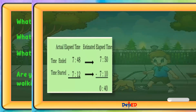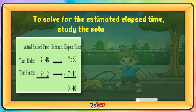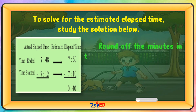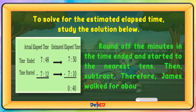To solve for the estimated elapsed time, study the solution below. Round off the minutes in the time ended and start to the nearest tens. Then subtract. Therefore, James walked for about 40 minutes.